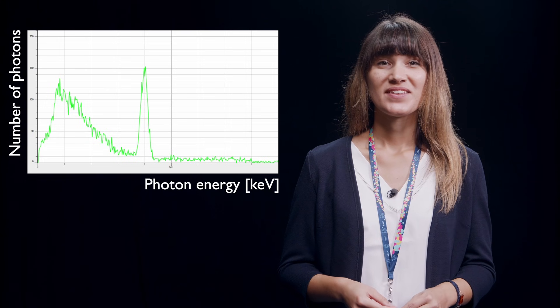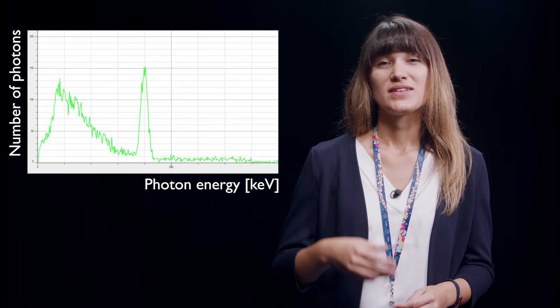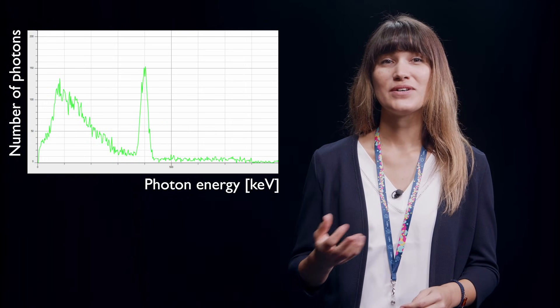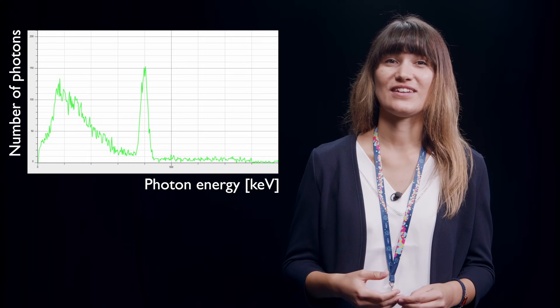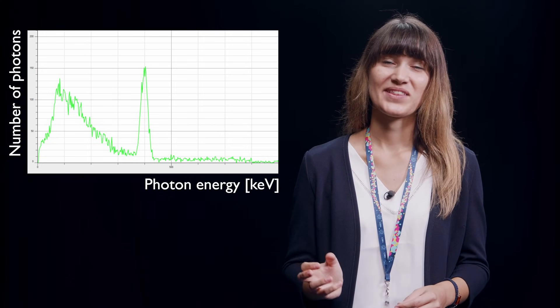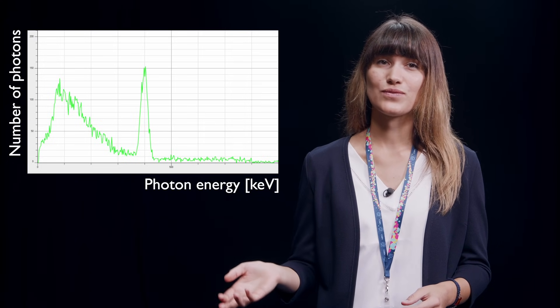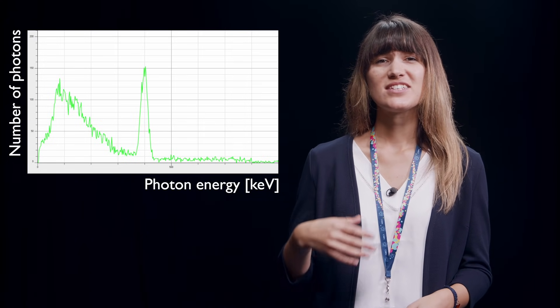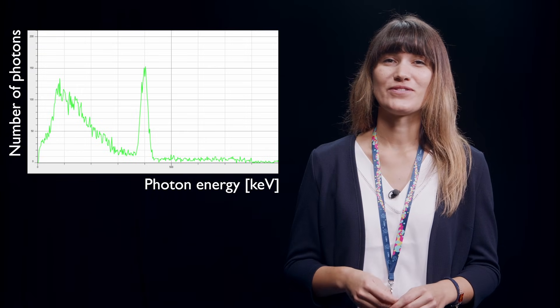This software provides us with an output diagram. The output diagram shows the number of detected photons as a function of the photon energy in keV. keV is short for kilo electron volt, which is an energy unit, as you might still remember from section 1.